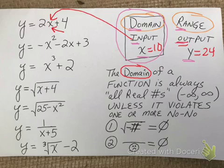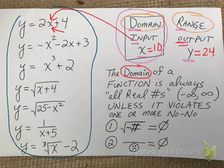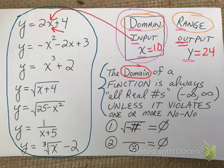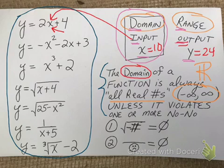I want to give you a rule for how to find domain — both numerically or algebraically, and by looking at a graph. A lot of students feel like they need to graph all these functions to state the domain, but I'm going to make this easy. The domain of a function is always all real numbers, with the exception of two things — two no-no's. The first no-no is you can't have a negative under a square root, and the other is you can't have zero on the bottom of a fraction.